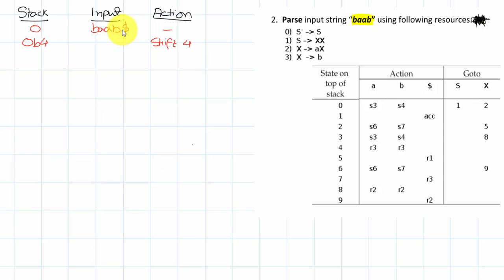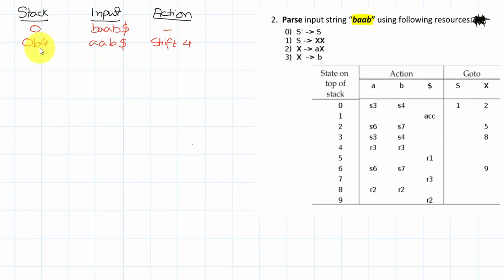The dollar sign is used to signify that we have reached the accepting state or that our input string is over. After shifting to state 4 and consuming B, you're left with A A B as the remaining input. Now with 4 on top of the stack and input A, you don't shift — you reduce. The reduce move is reduce by rule 3.